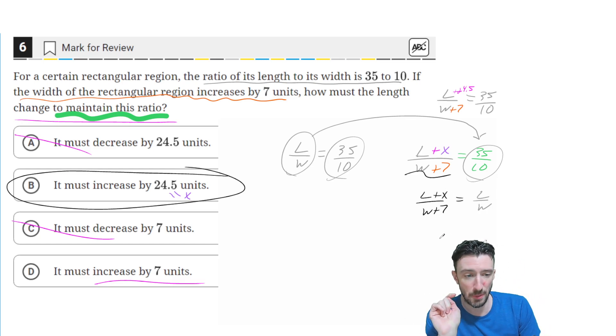Now I could cross multiply. If I cross multiply, I'll get WL plus xW equals WL plus 7L. But I see a WL on both sides. So goodbye, see you later.